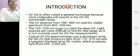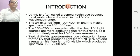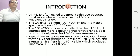UV-visible is often called a general technique because most molecules will absorb in the UV-visible wavelength range. The UV extends from 100 to 400 nm and the visible spectrum from 400 to 800 nm. The 100 to 200 nm range is called the deep or far UV. Light sources are more difficult to find for this range, so it is not routinely used for UV-visible measurements.